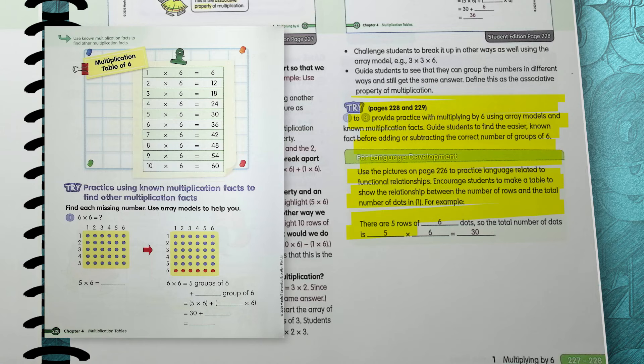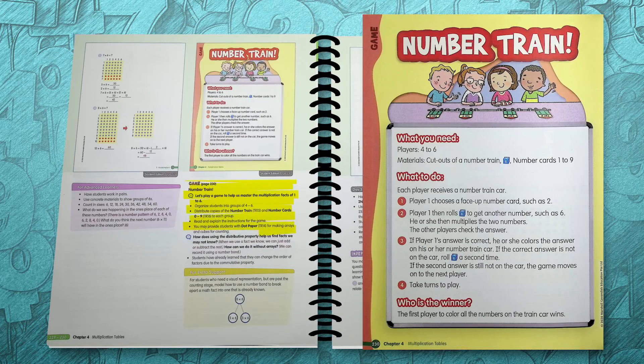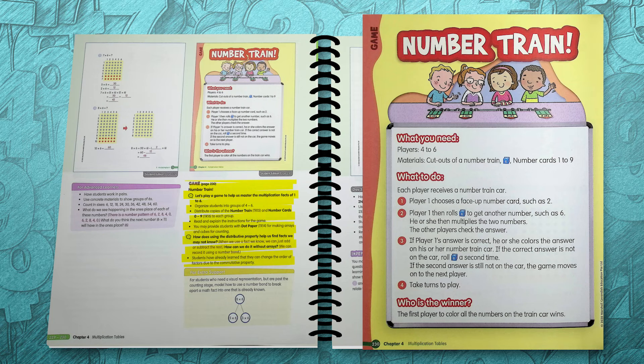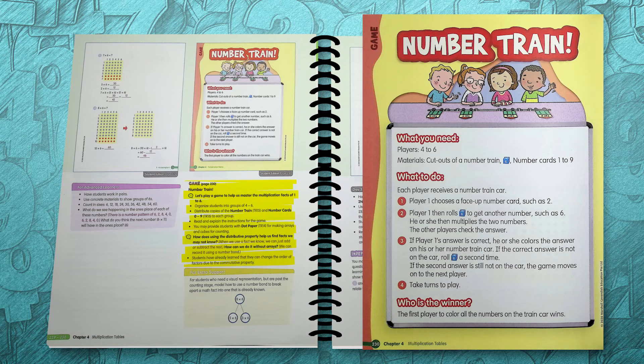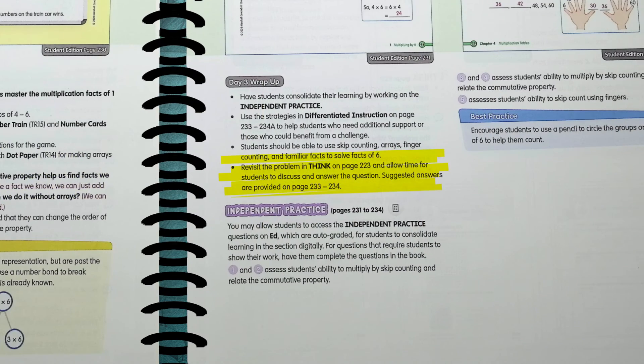The try section then gives your students the opportunity to give these strategies a try for themselves. There is also a game in the student edition that can be played to solidify the learning, or you can use the game later in the day or week for additional practice. You can wrap up the end of this day and section 1 by asking your students to go back to the think question and explain the answers using the strategies they have learned in this section.